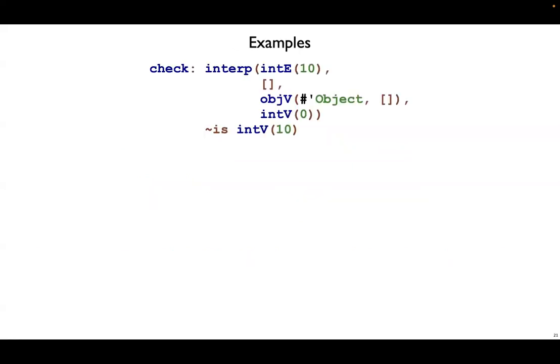Here's an example of calling interp. The expression we want to interpret is int e 10. In order to do that, though, we need to pass four arguments to interp. First is that int e, second, we need a class table. Here it's empty, so there are no classes.